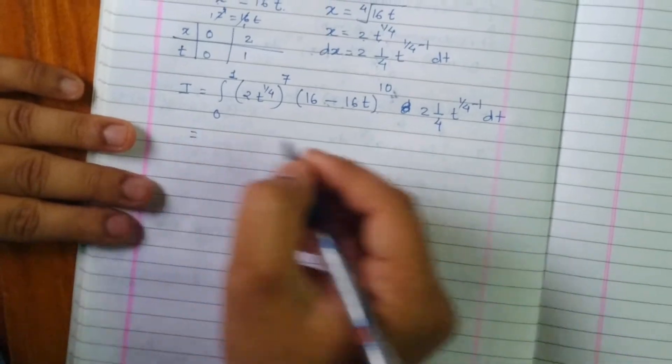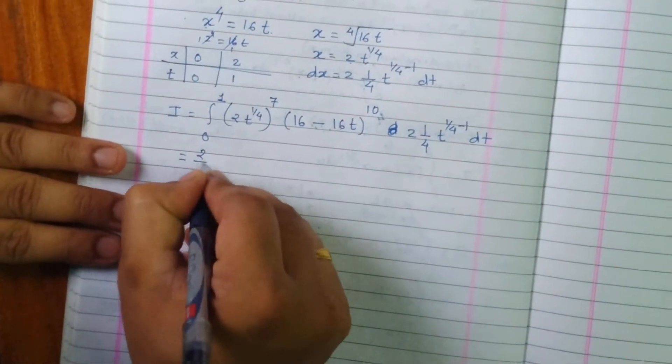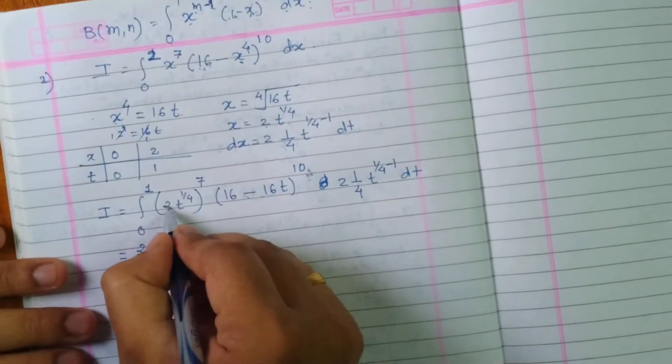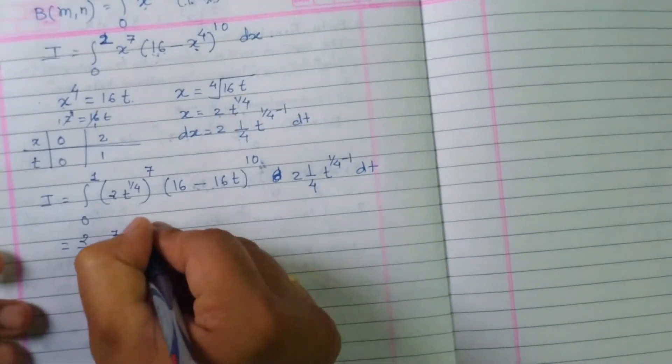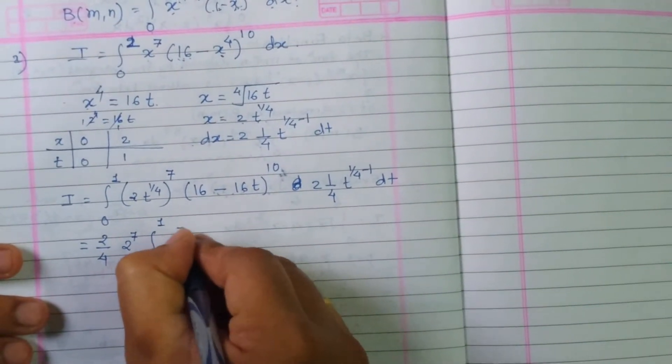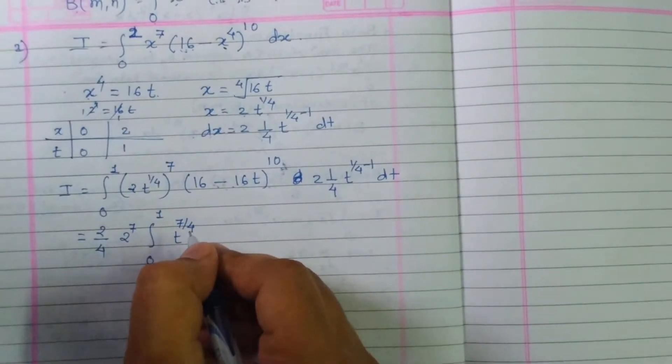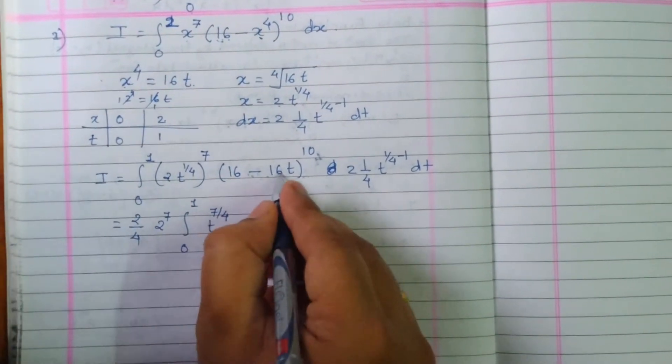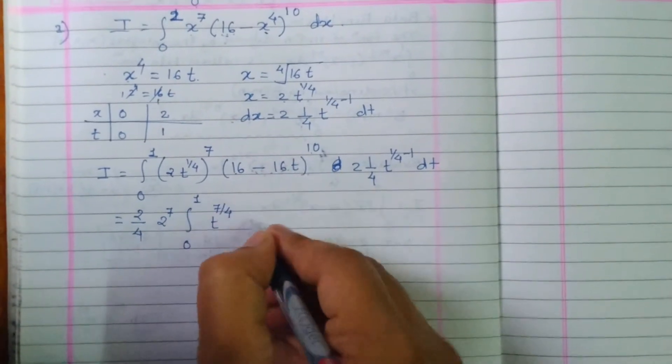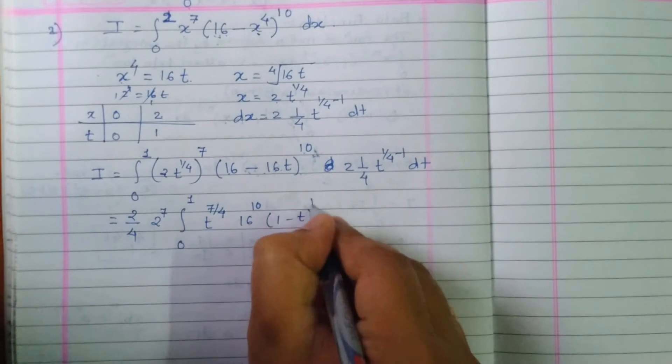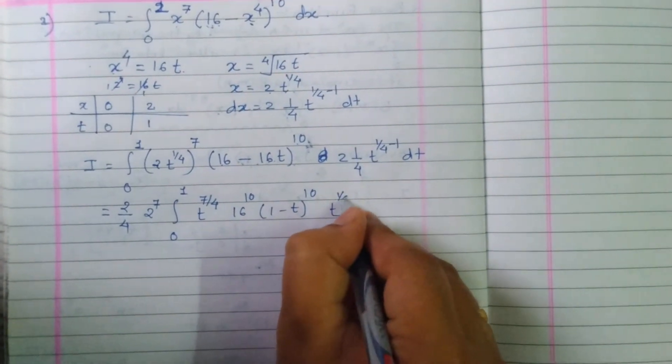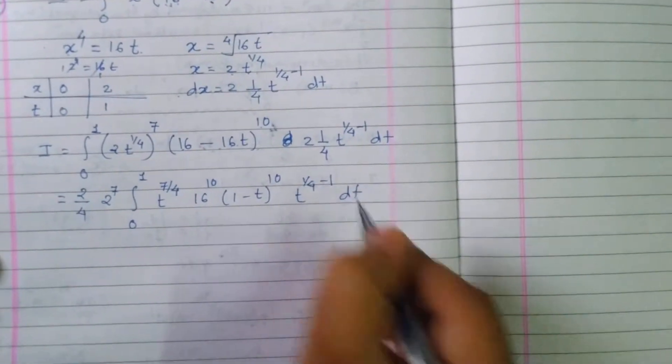This equals 2 times 1 by 4 written outside. 2 raised to 7 I also write outside of the bracket. Integration from 0 to 1, t raised to 7 by 4. Next we can take 16 common, but there is a bracket raised to 10, so we get 16 raised to 10 outside, times 1 minus t raised to 10, times t raised to 1 by 4 minus 1, dt.